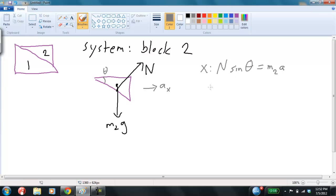Another equation. In the y direction, N cosine theta minus m2g equals m2ay, and what's the y acceleration of block two? This is zero, because we're trying to find where it stays on, right? So it's zero. So this is equal to zero.